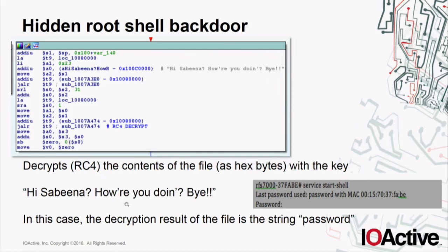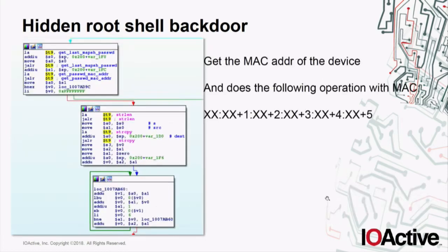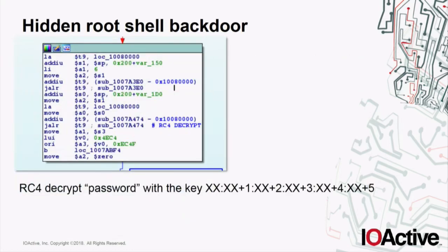After the RC4 decryption with that static key, the result is the password string in lowercase letters — which makes sense because we were in the get_last_password function, and that's why it prints 'last password used: password' in lowercase. Then the code gets the MAC address of the device, and with the MAC address, executes other instructions in a loop doing operations on it — like adding numbers to each byte of the MAC: the first byte adds zero, the second adds one, then two, three, four, and so on. After that, it calls another RC4 decryption routine, decrypting the password using this key — the MAC address with those operations applied.